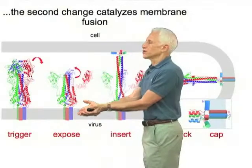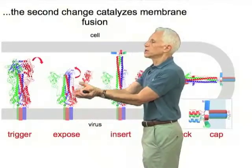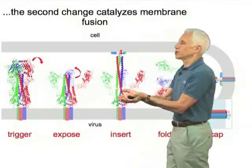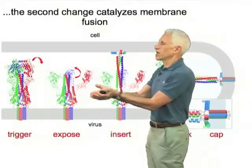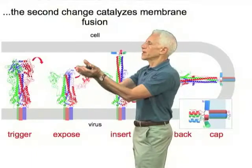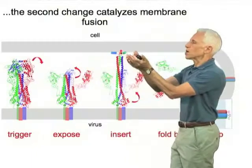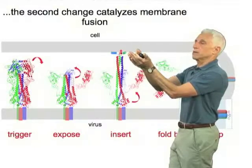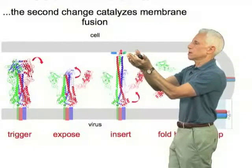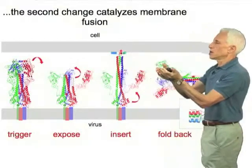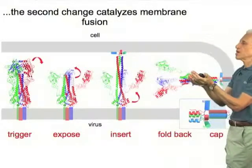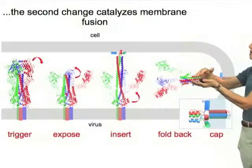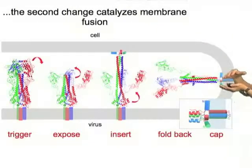And that allows the stalk — the HA2 stalk — to unfold and refold, so to speak. That is, it allows the fusion peptide to flip up, associate with the target bilayer, and then, along with the rest of the protein, collapse together to squeeze the two bilayers together, leading to membrane fusion.